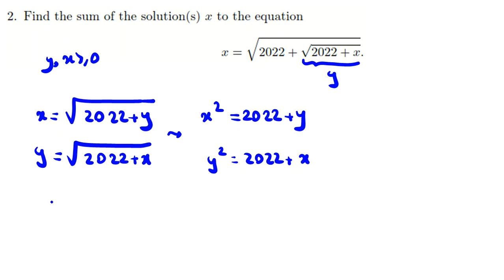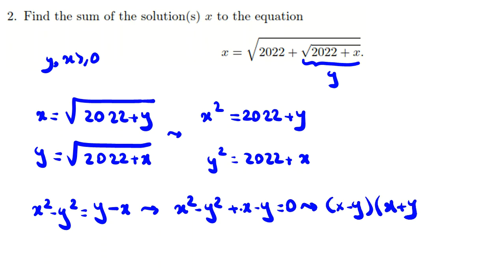If we subtract x squared minus y squared equals y minus x, then we can conclude x squared minus y squared plus x minus y plus one equals zero. Taking this to the left hand side gives (x-y)(x+y+1) = 0.